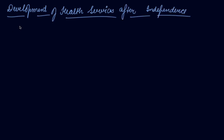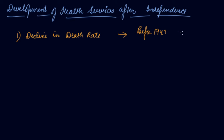Regarding the development of health services after independence: first is the decline in death rate. Before independence, before 1947, the death rate was 27.4%. But in 1951 it was about only 7.3%. So there is a significant decline in the death rate, which proves that health facilities have improved in India.